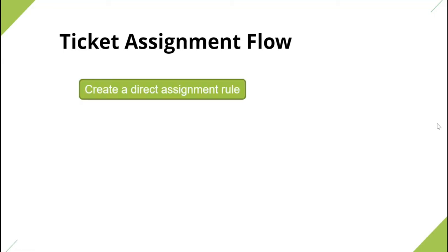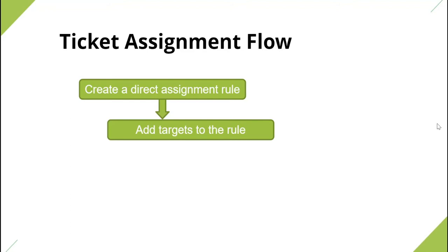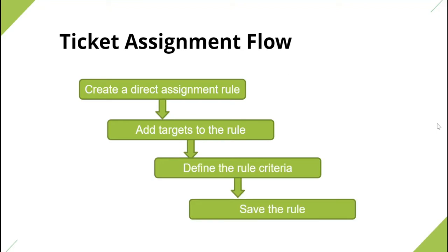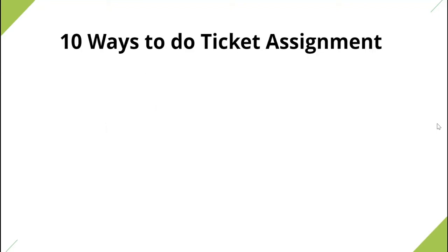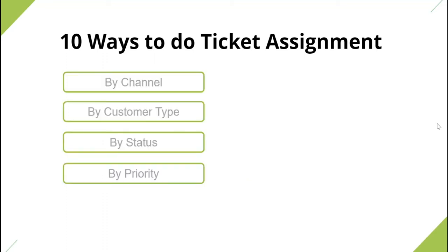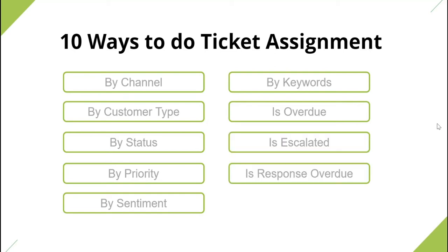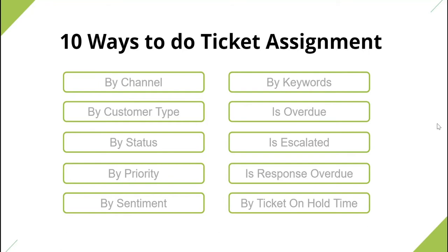You first create a direct assignment rule and add targets to the rule. Then you define the rule criteria and finally save the rule. Though Desk provides a number of criteria to choose from, the ones on screen are the most critical criteria that play a vital role while creating a target. They are: by channel, by customer type, by status, by priority, by sentiment, by keywords, overdue tickets, escalated tickets, response overdue tickets, and ticket on hold time.